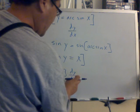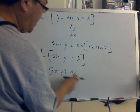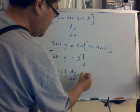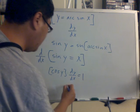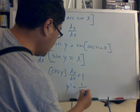And that's why you have to take the product of the derivative of y with cosine of y, and the derivative of x is 1. So you have y prime equals 1 over cosine of y.